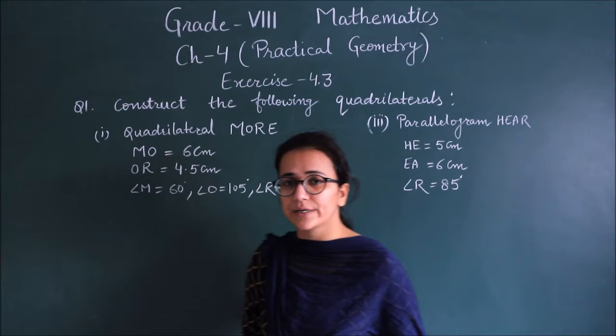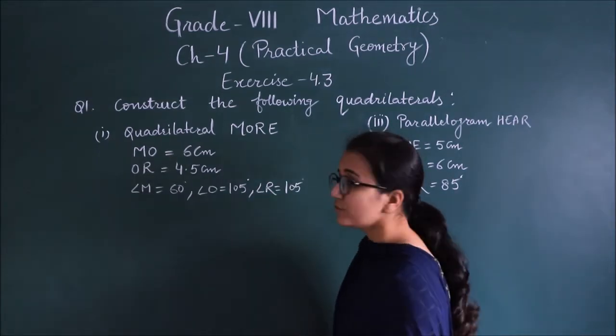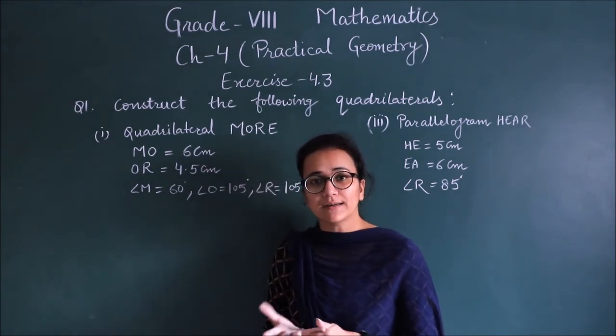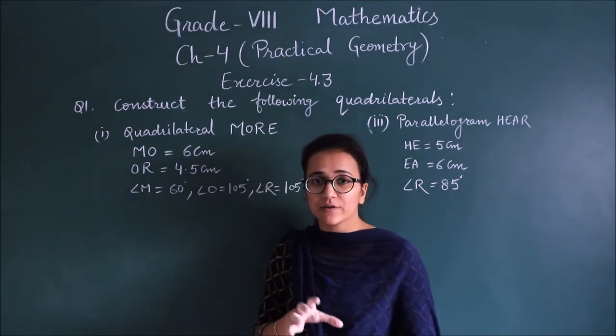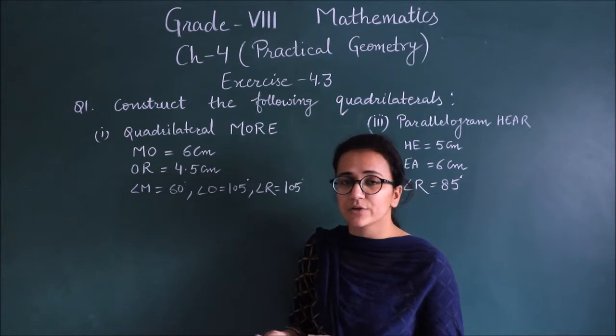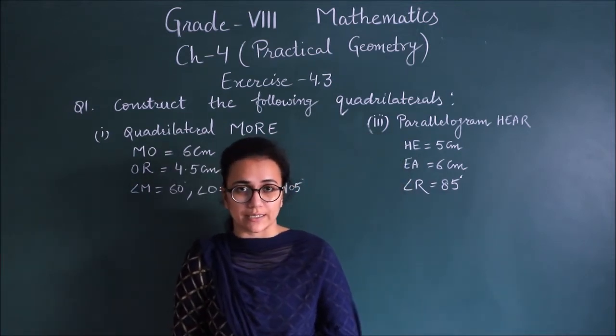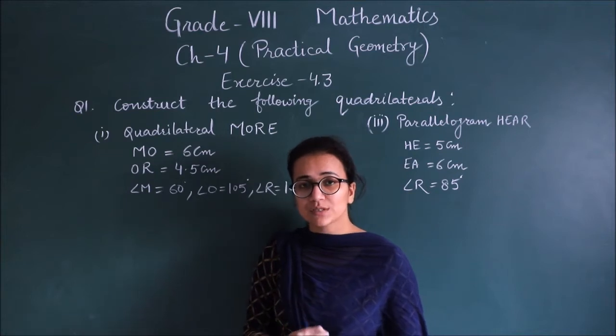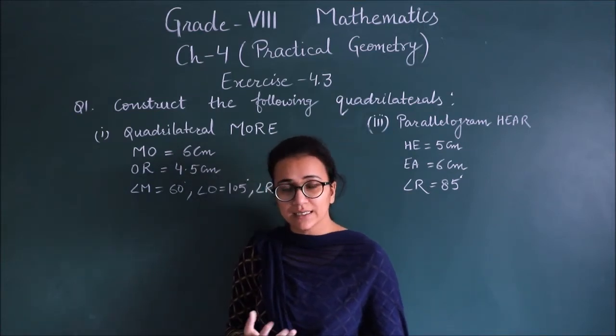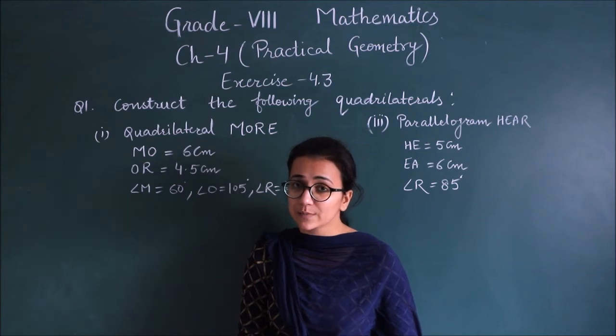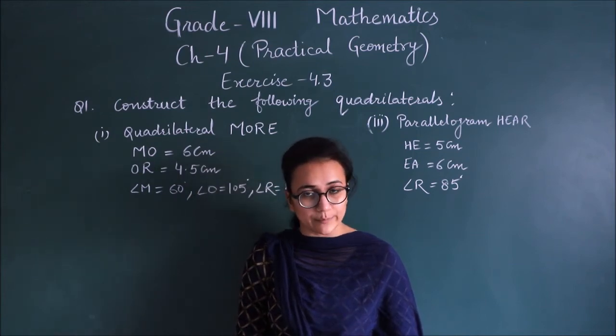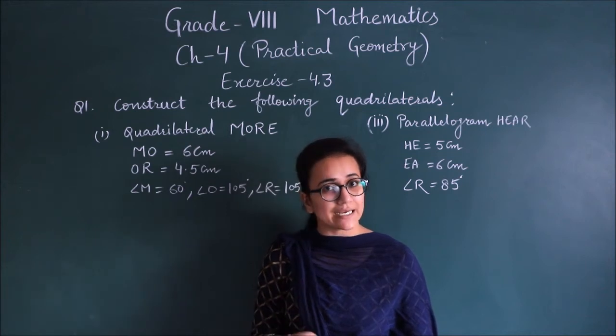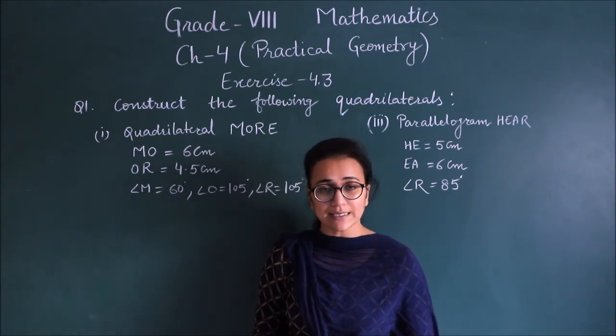Today in this class we are going to start exercise 4.3. This whole chapter we are learning quadrilateral constructions. When we have measurements given different types, we will make quadrilateral. So in this exercise, what will be given? You will have sides and some angles given. When you have given all sides, you have learned 4.1. In 4.2, you have 2 diagonals plus 3 sides given, then you are learning how to do it.